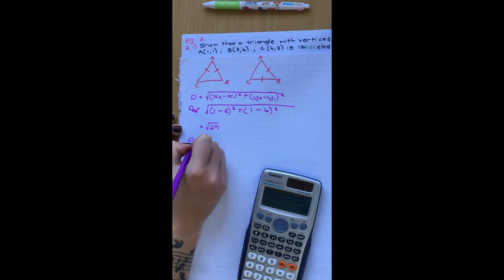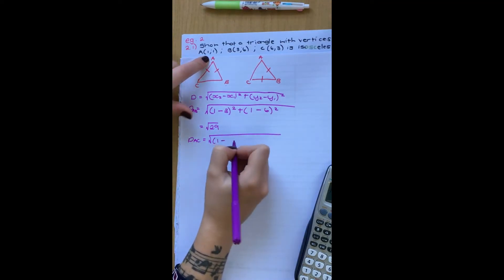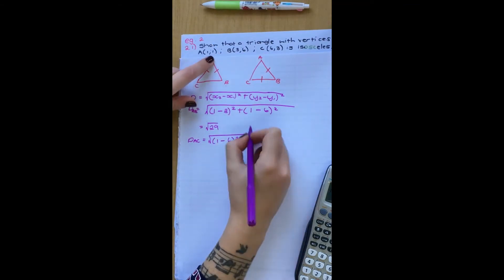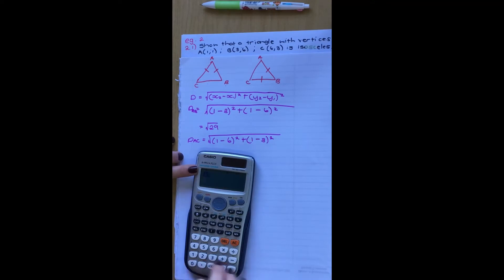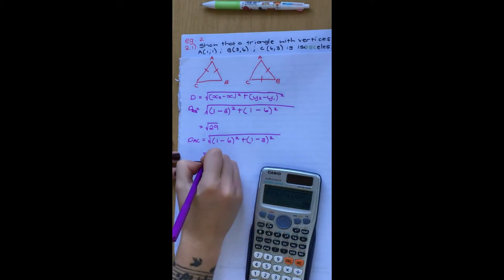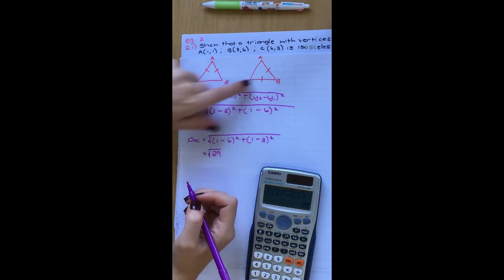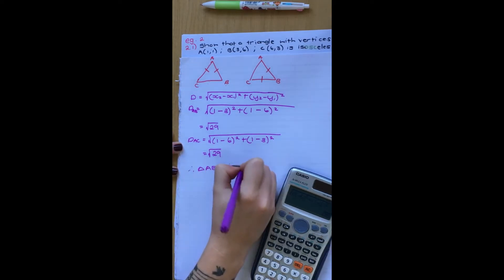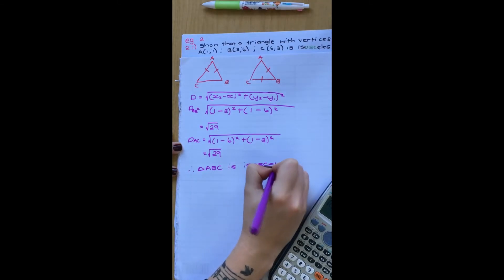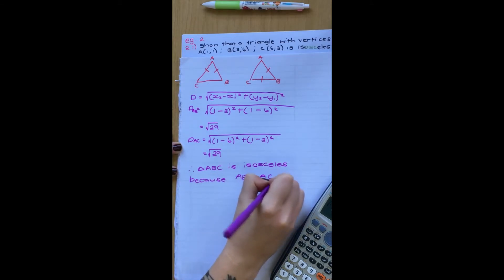Now let's try AC. Distance AC will be: 1 minus 6, squared, plus 1 minus 3, squared. Let's check: square root of (1 − 6)² + (1 − 3)² — and we get root 29. So AB equals AC. If that hadn't worked, you could have tried AB and then BC using different points and filling them into the formula. Therefore, triangle AB equals AC — it is isosceles.